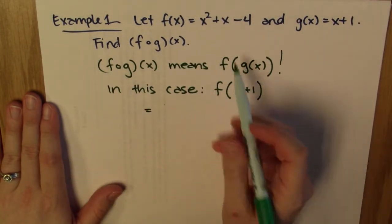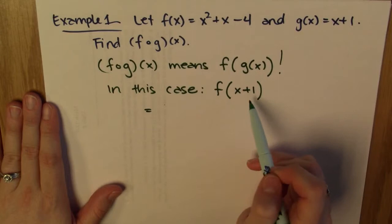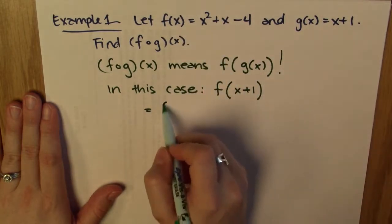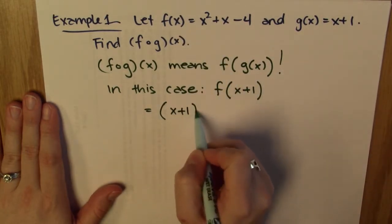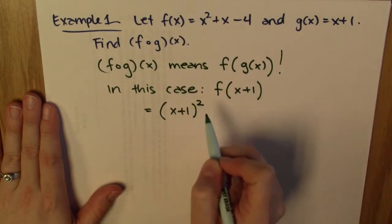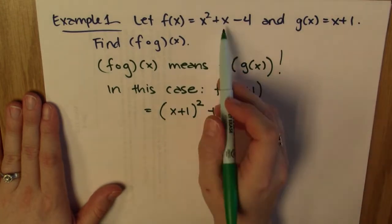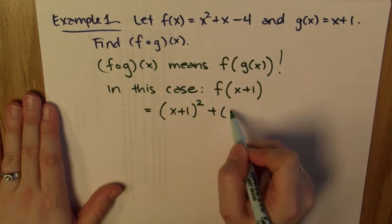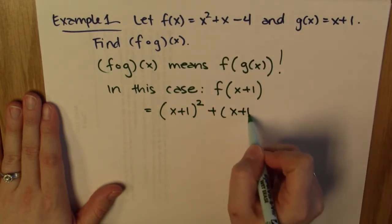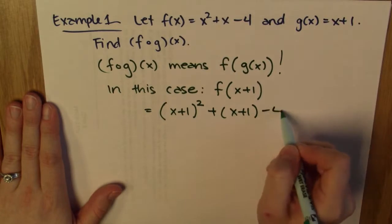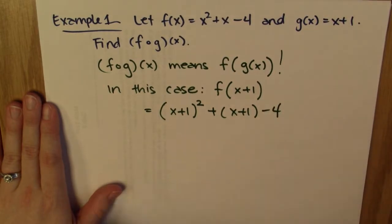What does f do? It takes the input x and squares it. So I get x plus 1, squared. Then I add the input again, x plus 1. And then I subtract 4.